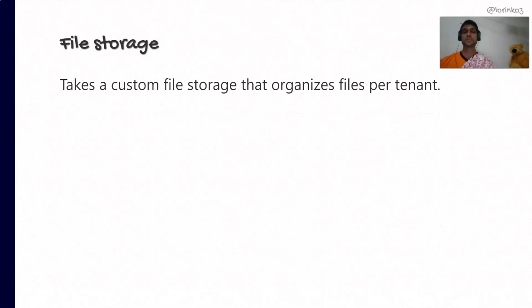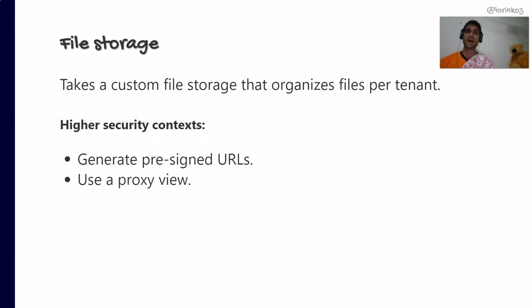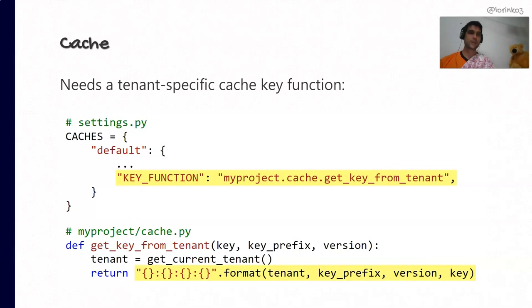As for file storage, it's extremely useful to organize files per tenant. It's perfectly possible to implement a custom file storage that uses a string representation of the tenant to organize files. In higher-security contexts where one tenant cannot access another tenant's data, you could either generate pre-signed URLs if your file storage supports it, or use one of the existing packages that use a proxy view to determine whether an incoming file request has the clearance to access that file.